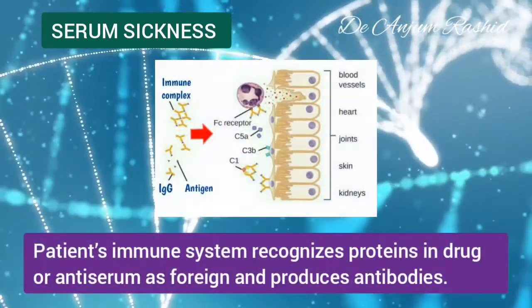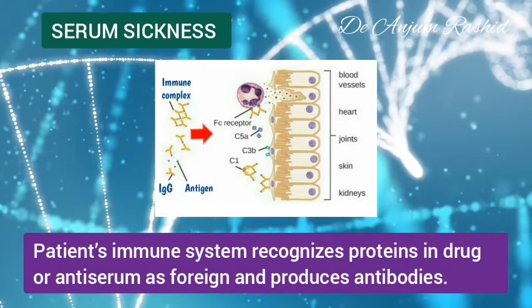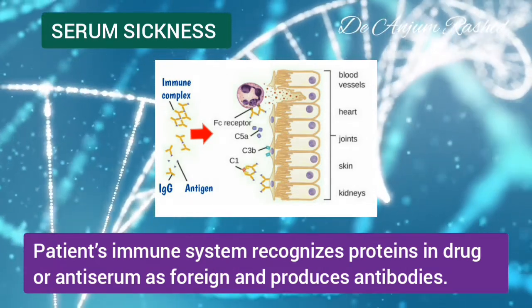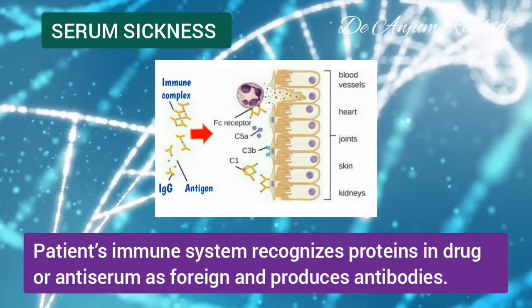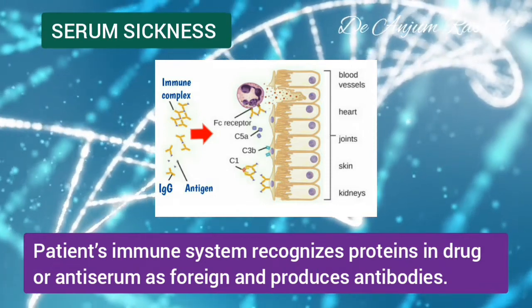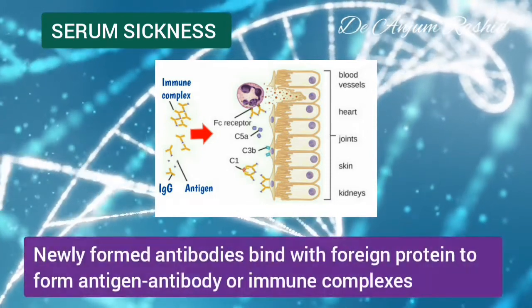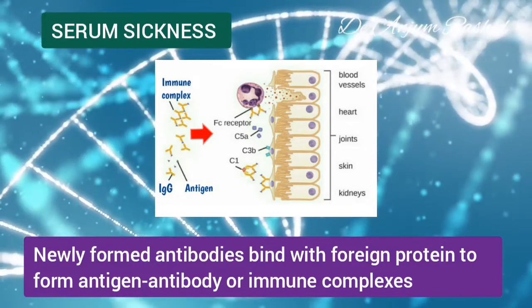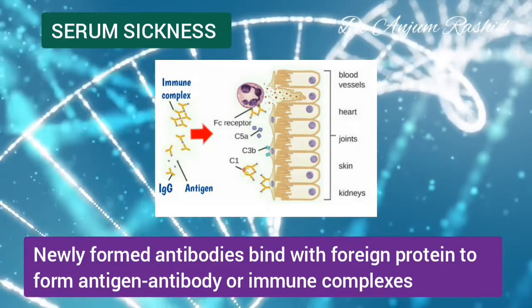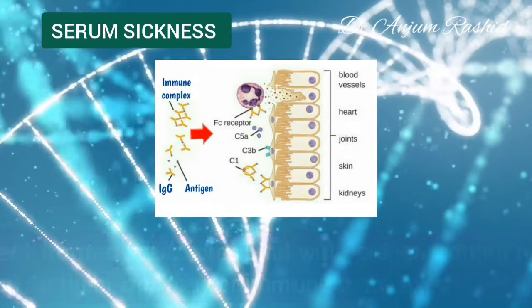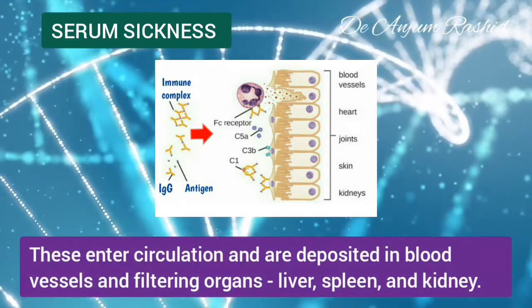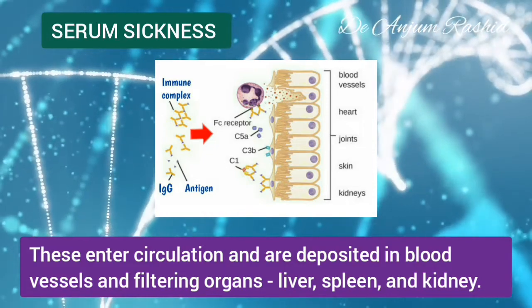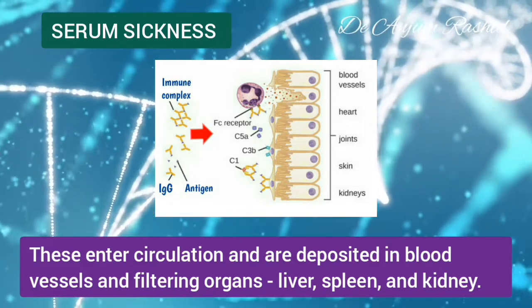The patient's immune system recognizes the proteins in that drug or antiserum as foreign and produces antibodies against them. The newly formed antibodies bind with the foreign proteins to form antigen-antibody or immune complexes. These immune complexes may enter the circulation and be deposited in the blood vessels and the filtering organs, which include